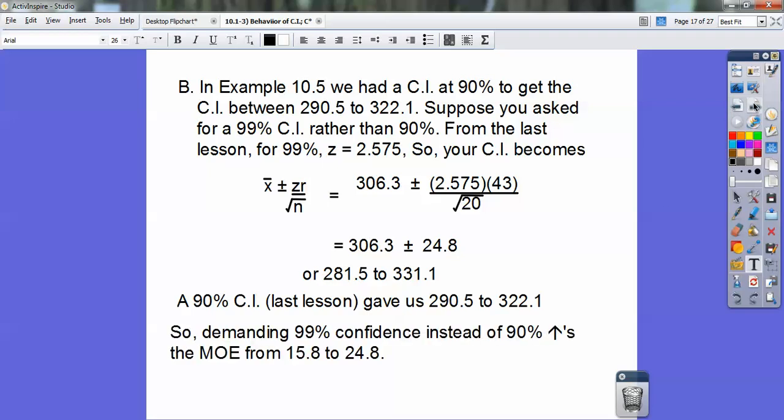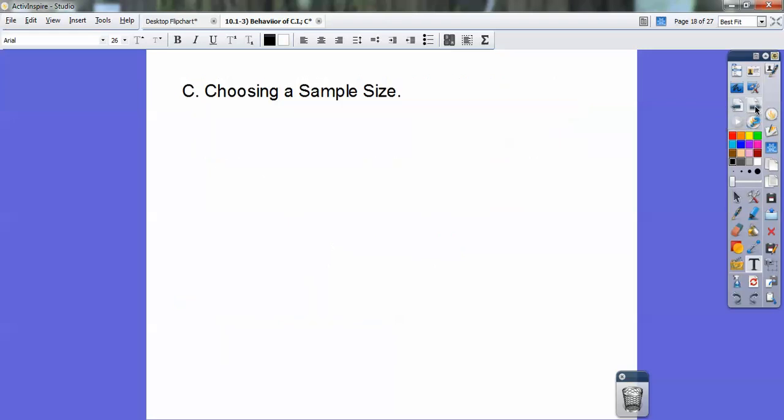Demanding a 99% confidence interval instead of a 90% confidence interval increases the margin of error from 15.8 to 24.8. This 24.8 is the margin of error. The bigger your confidence interval, the bigger spread it's going to have.